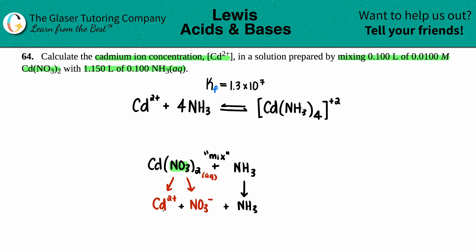We're now learning how to make complex ions. Complex ions come from metals combined with either a neutral covalent compound or a negatively charged covalent compound. In this case ammonia is neutral, so cadmium and ammonia are making the complex ion. I went to the back of the textbook because we need the complex ion equation with its corresponding formation constant value.